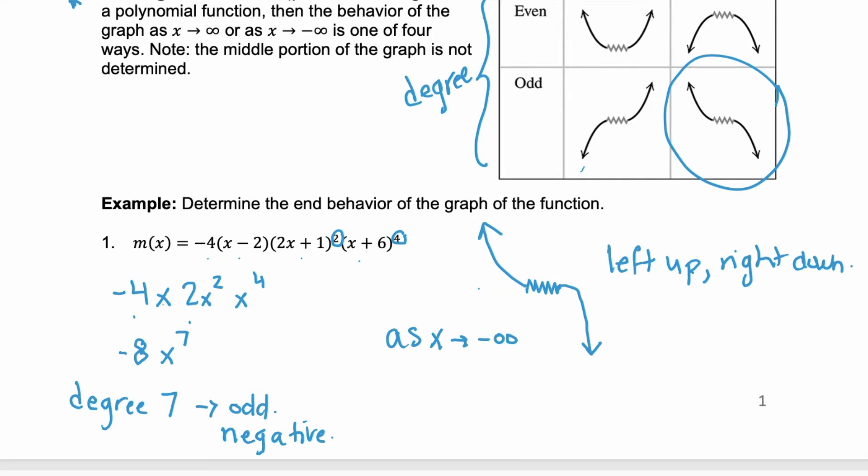That left side is saying that as x approaches negative infinity, right, this direction is negative x. So, you're approaching negative infinity. That function here, m(x), is going up, which is approaching positive infinity. Where on the other side, as x approaches positive infinity, right, this is our positive end of the x-axis, our function is going down, so it is approaching negative infinity.